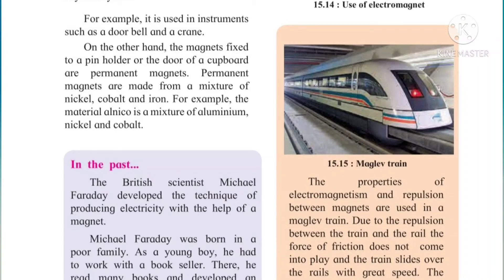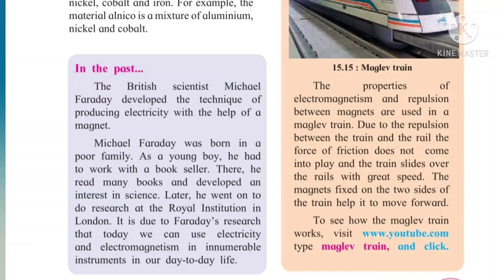Now look at the picture of the maglev train. The properties of electromagnetism and magnetic repulsion are used in it — opposite poles are used. Due to repulsion between the train and the rail, friction does not come into play and the train slides over the rails with great speed. The magnets fixed on the two sides of the train help it move forward. For more information, visit the website given and watch the maglev train video with the help of your parents.